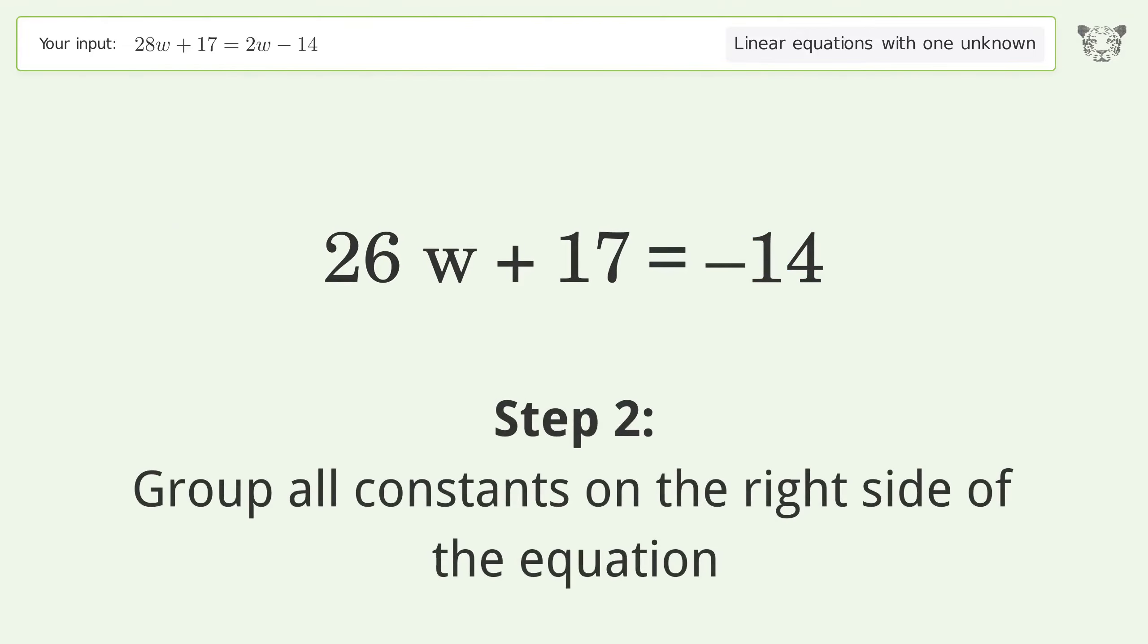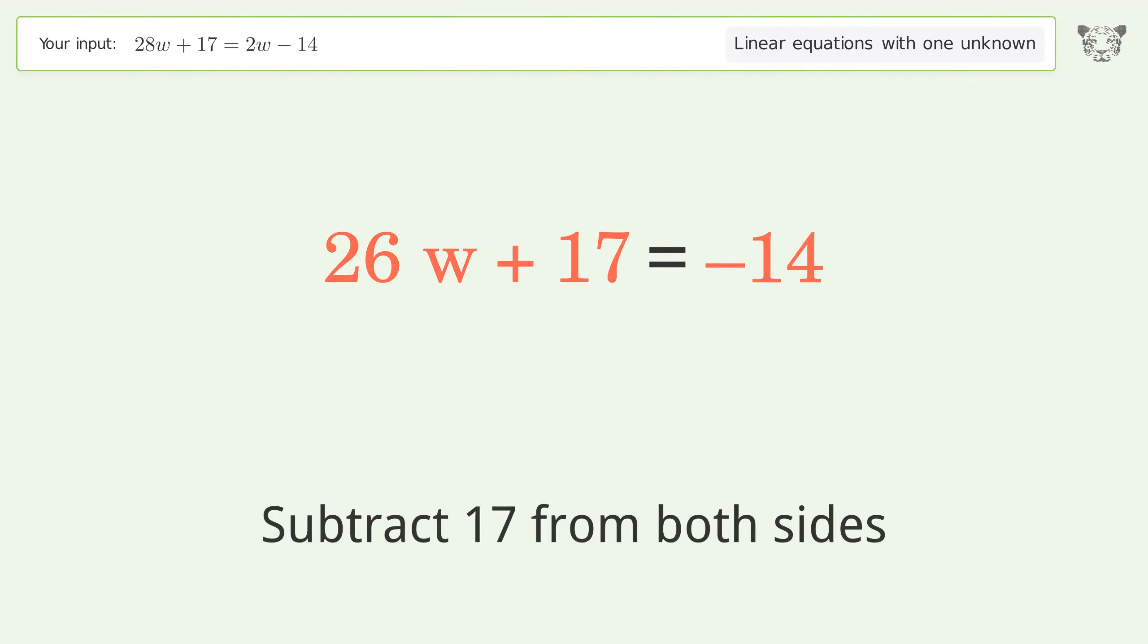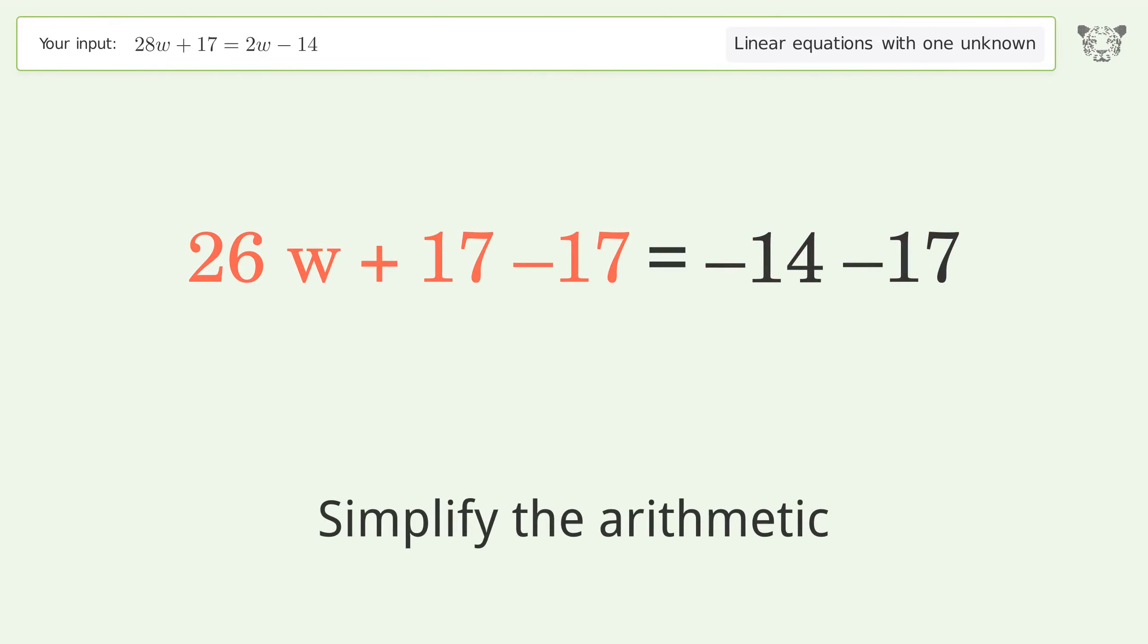Group all constants on the right side of the equation. Subtract 17 from both sides. Simplify the arithmetic.